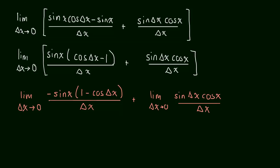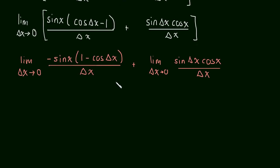Okay, and then we're pretty much done with the solution. Do you see it? Do you see what the answer is? Well, this is the limit as delta x approaches 0 of the negative sine x times by 1 minus cos of delta x all over delta x plus the limit over here as delta x approaches 0 of sine of delta x over delta x times by the cos of x.